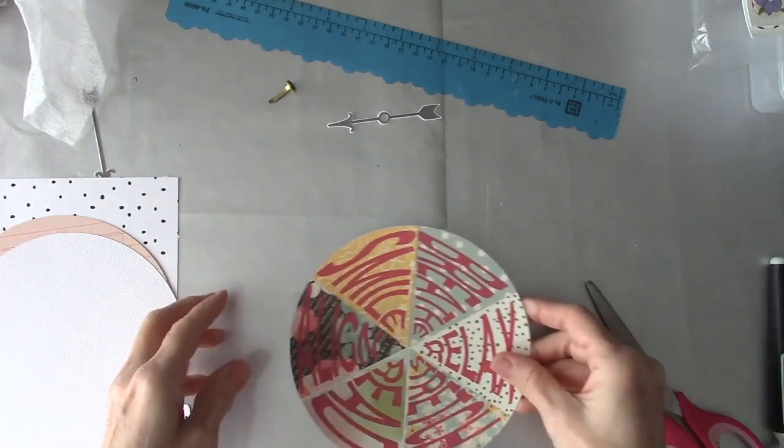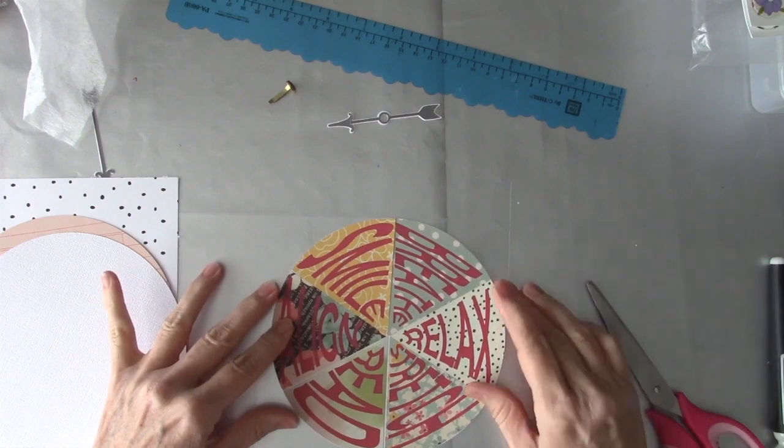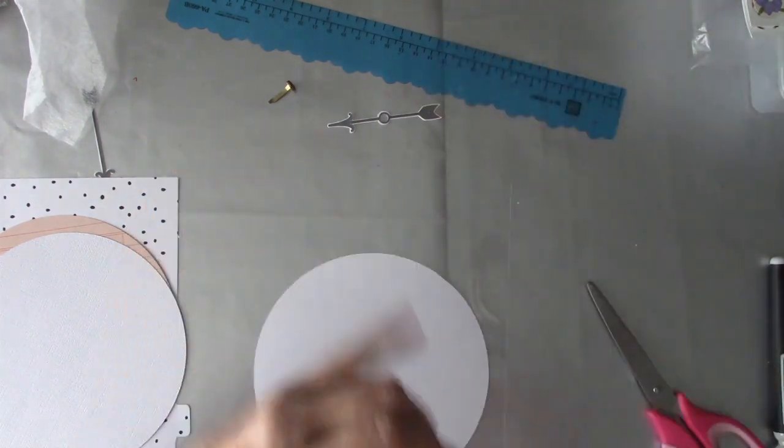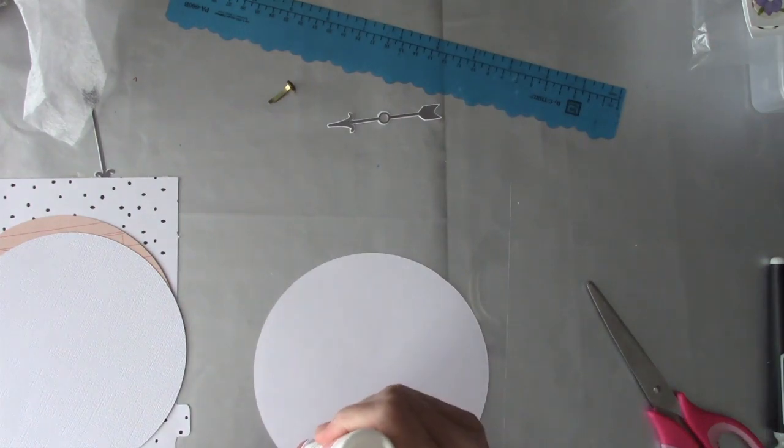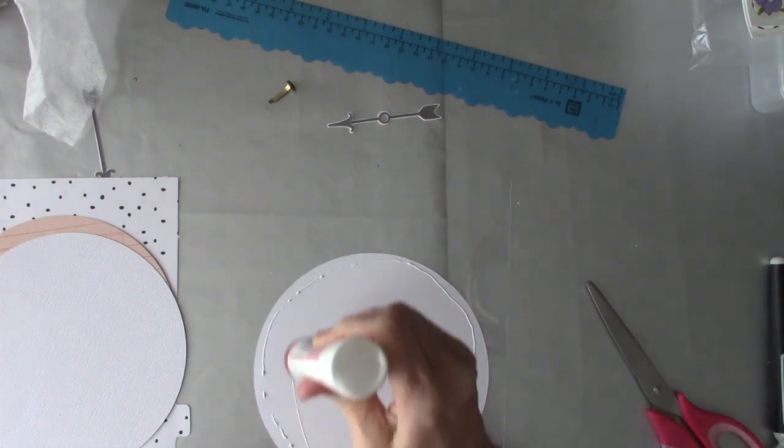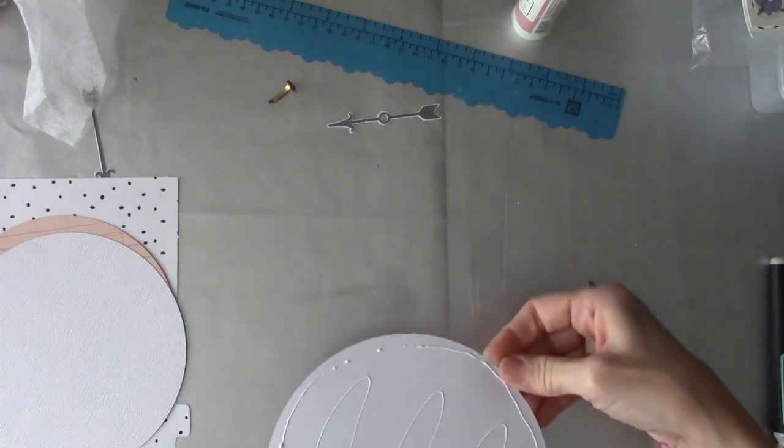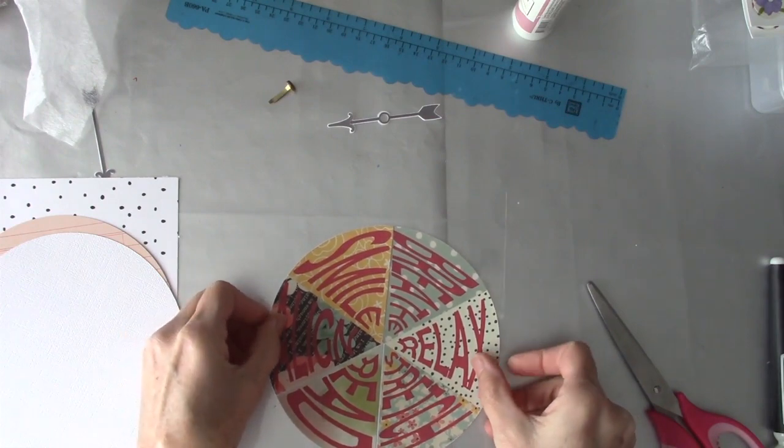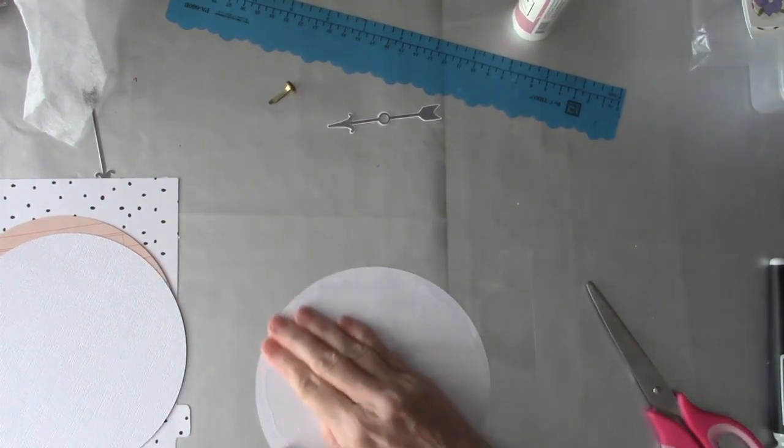So I want this on here closer to the right edge than the left so there's room for the holes. I guess we'll see if this glue will stick to plastic. I think it will, we'll give it a shot. There we go.